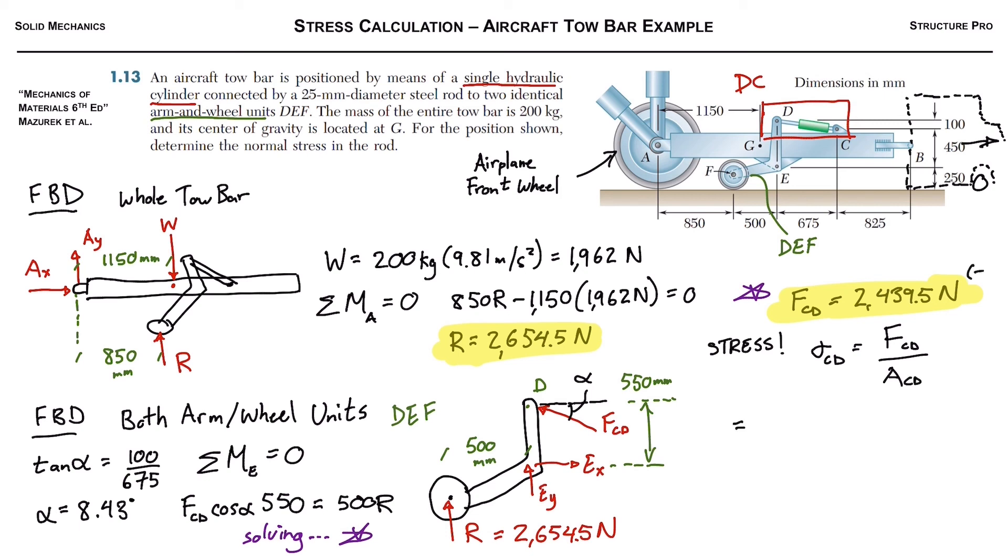So all that's left is to just pop this into the stress formula. So we have obviously compression, we said earlier there was compression. So we get the 2439.5 newtons all divided by pi times the radius squared.